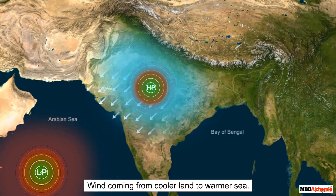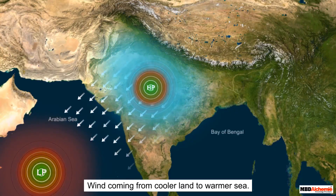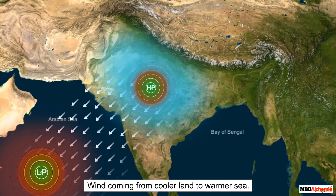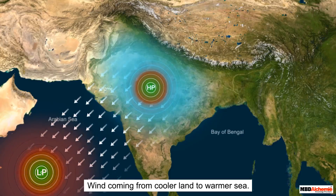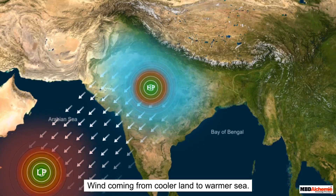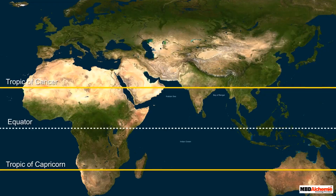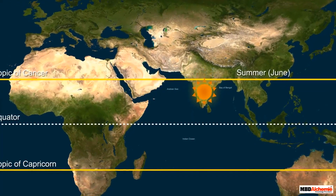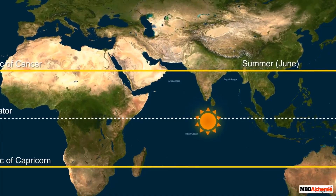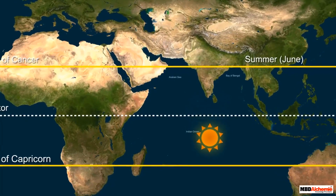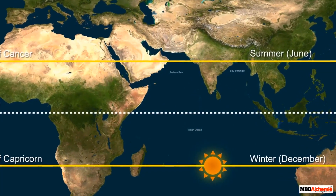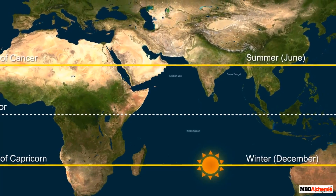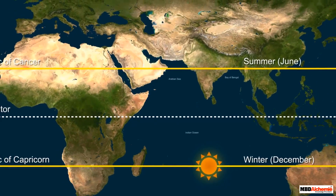Thus, a steady flow of moisture-laden wind moves towards India and causes rainfall for almost three months. As the pressure system reverses due to the apparent shifting of the sun from the Tropic of Cancer to the equator, the wind also reverses back. The apparent movement of the sun from the Tropic of Cancer in June to the Tropic of Capricorn in December affects the global climate, changing pressure belts and wind systems globally.